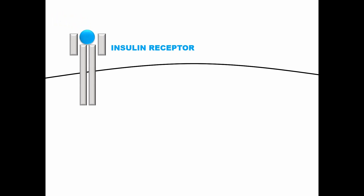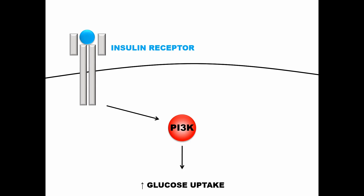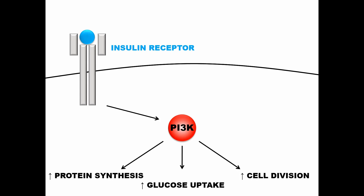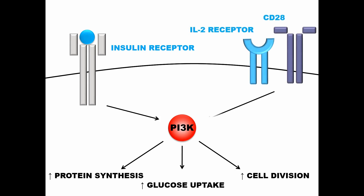Upon binding of insulin, the insulin receptor activates the protein PI3 kinase, which is a major signaling nexus for many processes in the cell. In liver and muscle cells, PI3 kinase is responsible for increased glucose uptake. But PI3 kinase also stimulates other processes associated with growth, such as protein synthesis and cell division. In immune cells, such as CD8+ T cells, key activating receptors such as IL-2 receptor or CD28 signal over PI3 kinase to mediate their antiviral effect.